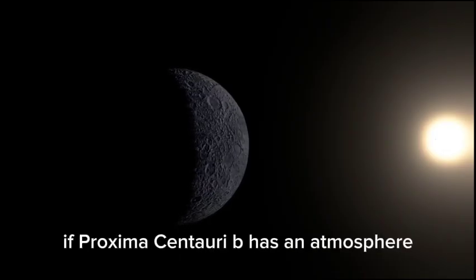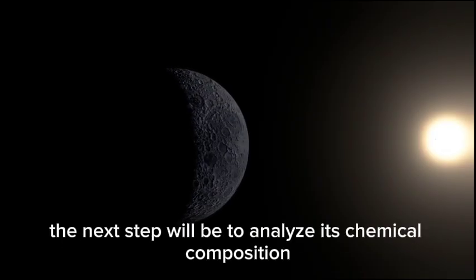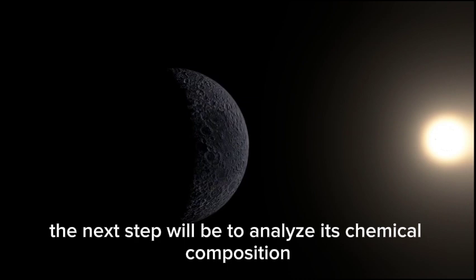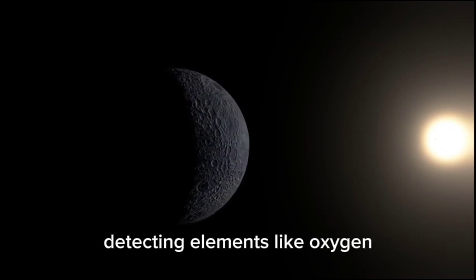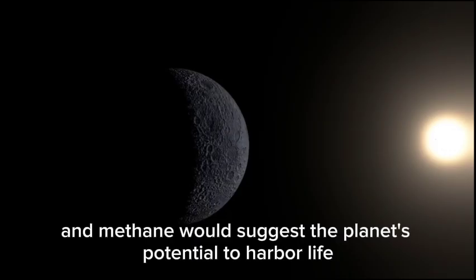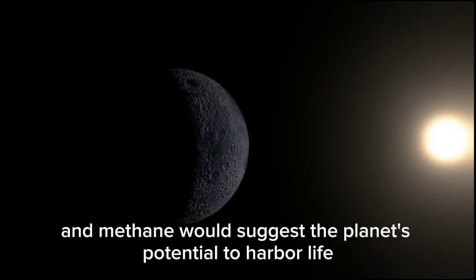If Proxima Centauri b has an atmosphere, the next step will be to analyze its chemical composition to determine if it could support life. Detecting elements like oxygen, water vapor, and methane would suggest the planet's potential to harbor life.